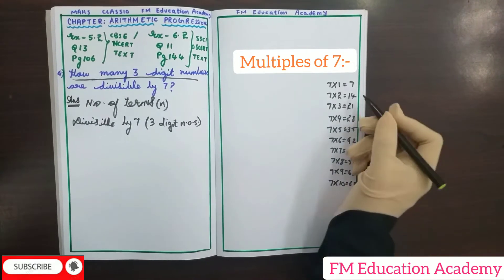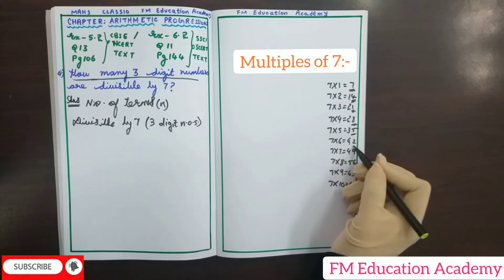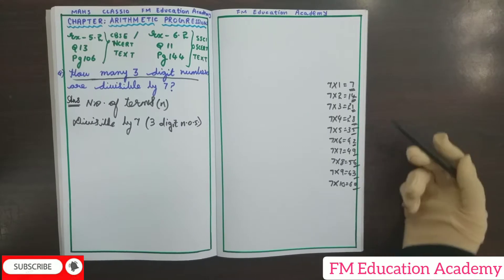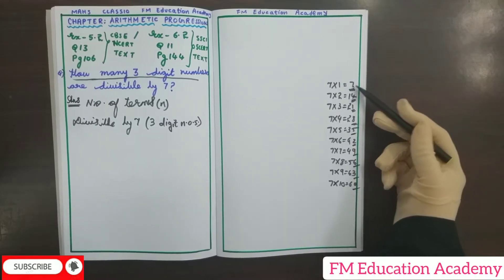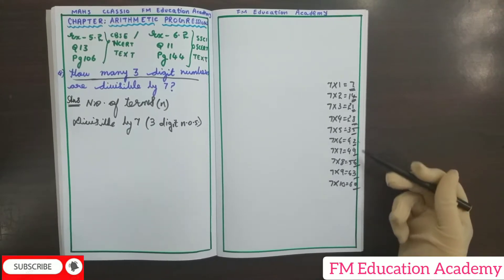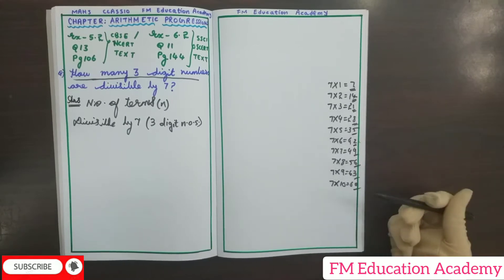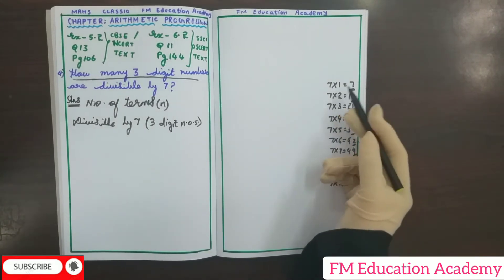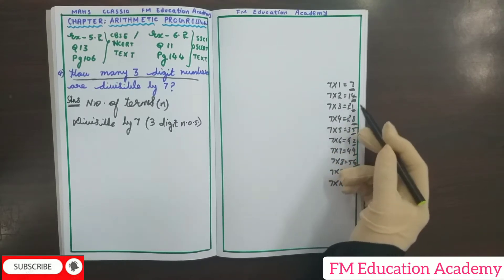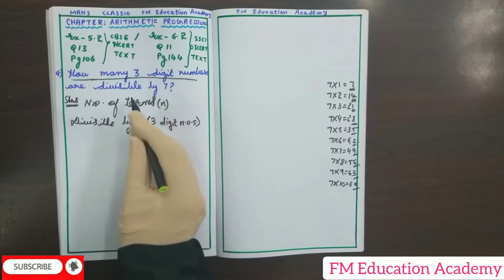Always look at the units digit. In the multiples of 7, the units digits are 7, 4, 1, 8, 5, 2, 9, 6, 3, 0. If a number has one of these as its units digit, I can check whether it is divisible by 7 or not. Since my question asks for three-digit numbers divisible by 7, I will not choose 7, 14, or 21 as these are single-digit and two-digit numbers.